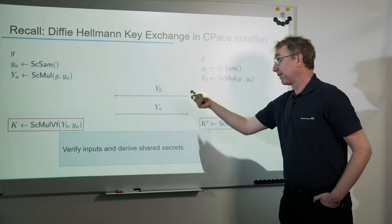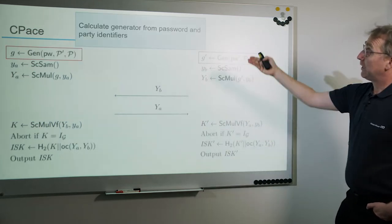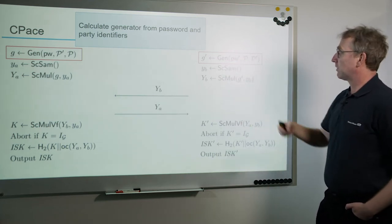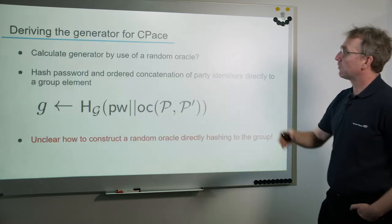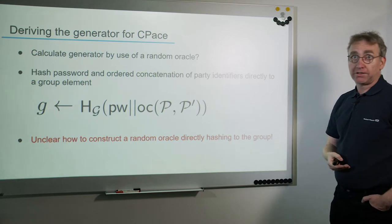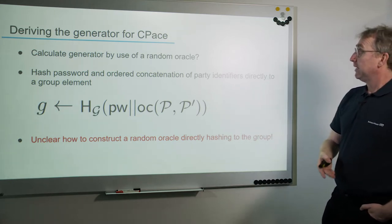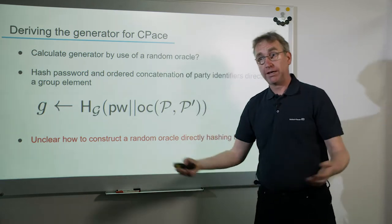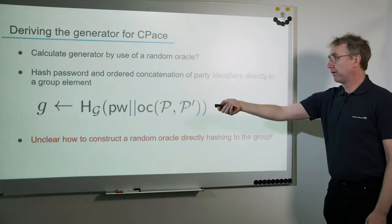CPACE is exactly like Diffie-Hellman with the only difference that we calculate the generator from the password and the party identifiers. So we have this additional sub-step in CPACE. It would be ideal if we had a random oracle HG that hashes a string and directly outputs a group element, but unfortunately it's unclear how to construct such a random oracle, so this is not available in practice.